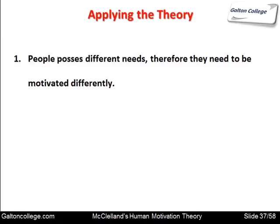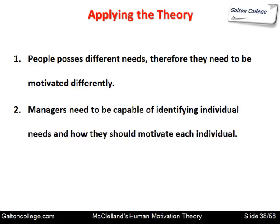Applying the theory: people possess different needs and therefore need to be motivated differently. It's important to recognise which needs are dominant in people and try to fulfil those needs. Managers need to be capable of identifying individual needs and how they should motivate each individual, and should try to allocate each person to a situation which will maximise their interest, productivity, and application — because they're working in a situation where their needs are being met.